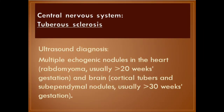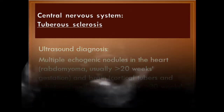Tuberous sclerosis — ultrasound diagnosis: multiple echogenic nodules in the heart (rhabdomyomas), usually after 20 weeks gestation, and the brain shows cortical tubers and sub-ependymal nodules, usually after 30 weeks gestation.